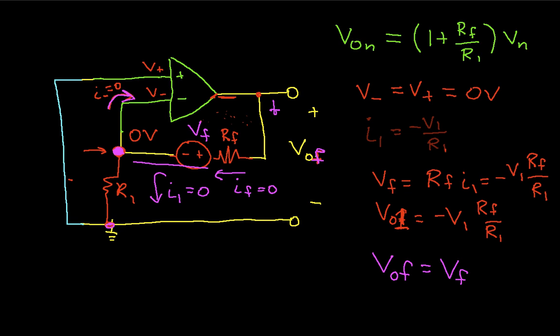And so the noise at the output due to the op-amp is given by this expression. It's equal to the input referred noise, which is a parameter of the op-amp, times the non-inverting gain.